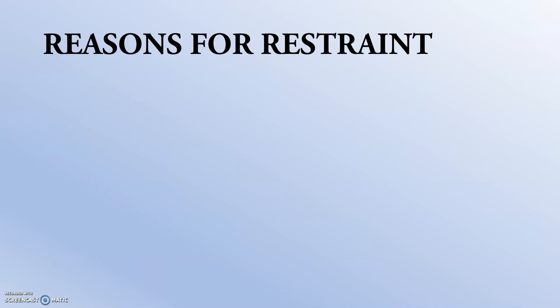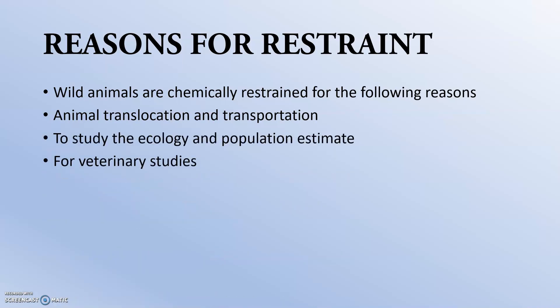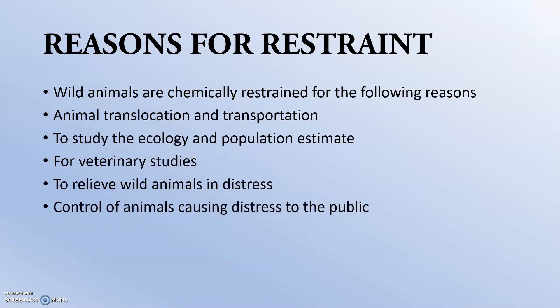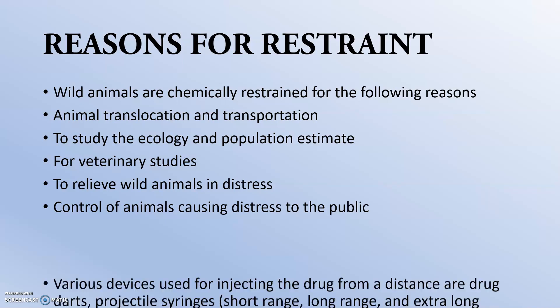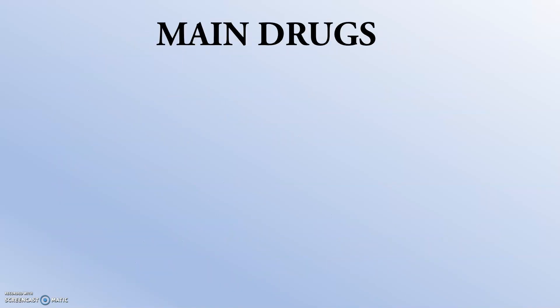Reasons for chemically restraining wild animals include: animal translocation or transportation, studying ecology and population estimates, veterinary studies, relieving wild animals in distress, and control of animals causing distress to the public. Various devices used for injecting drugs from a distance include drug darts, projectile cylinders, and similar equipment.